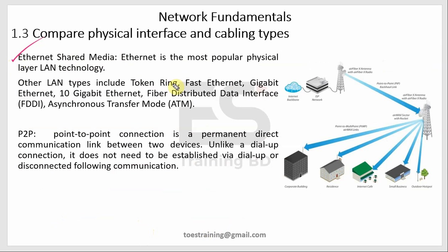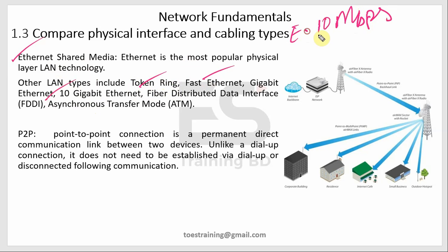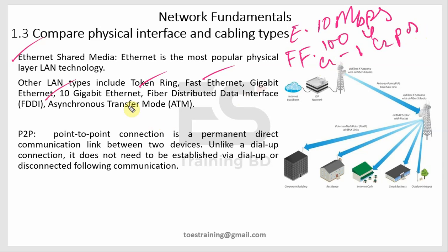Ethernet shared media is the most popular LAN technology. Other LAN technologies also include token ring. Ethernet speeds include: Ethernet at 10 Mbps, Fast Ethernet at 100 Mbps, Gigabit Ethernet at 1 Gbps, and 10 Gbps, 20 Gbps, and 40 Gbps variants.